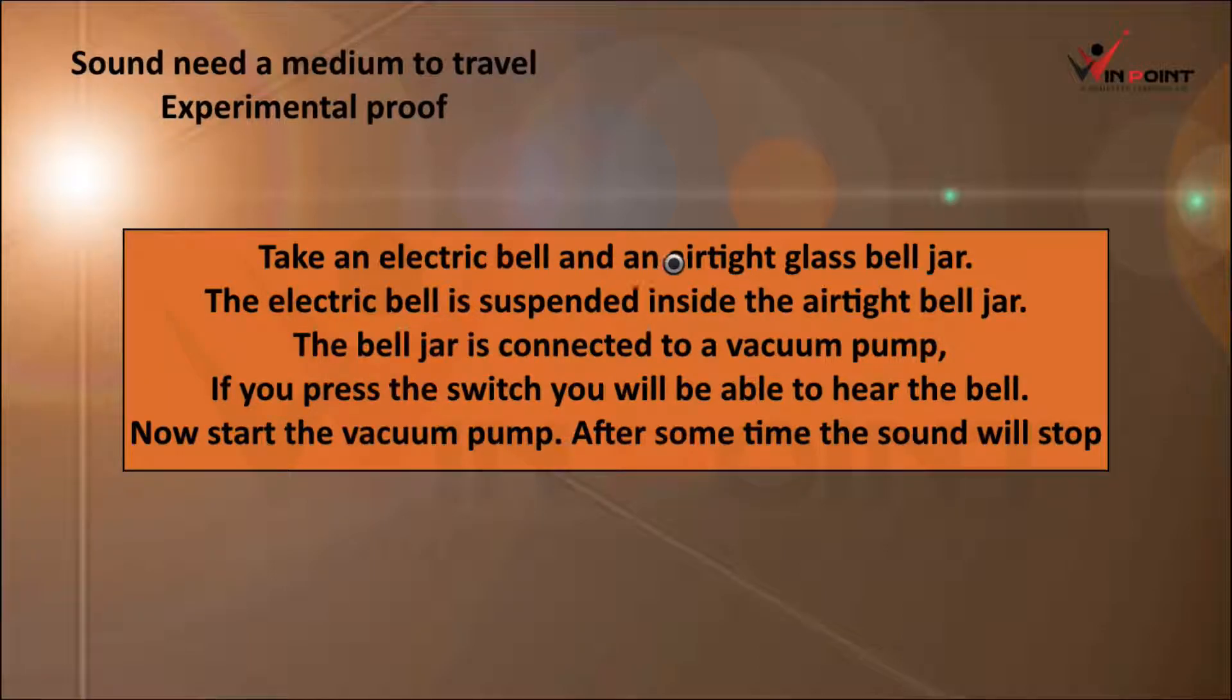Take an electric bell and an airtight glass bell jar. The electric bell is suspended inside the airtight bell jar. The bell jar is connected to the vacuum pump. If you press the switch, you will be able to hear the bell. Now start the vacuum pump. After some time, the sound will stop.